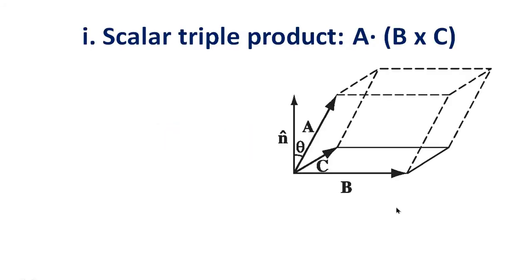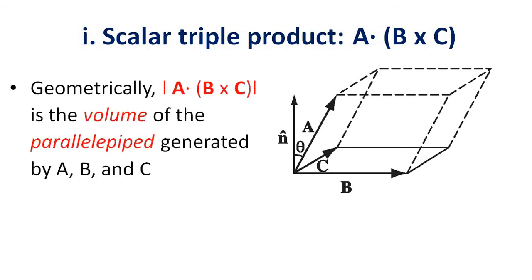Triple products. The scalar triple product is a dot b cross c. This is vector a, vector b, and vector c — they form a parallelepiped. Geometrically, the magnitude of a dot b cross c is the volume of the parallelepiped generated by a, b, and c.